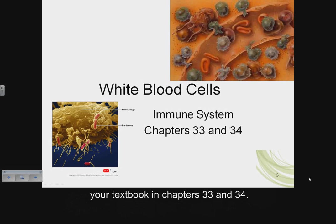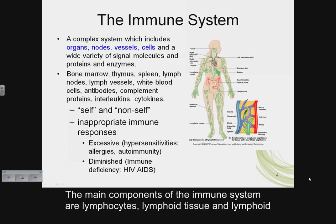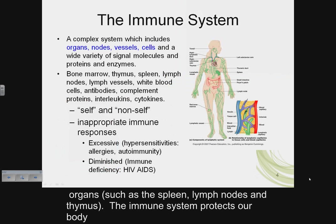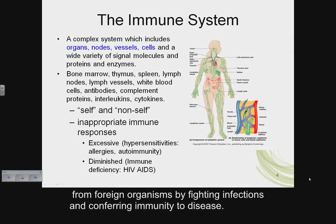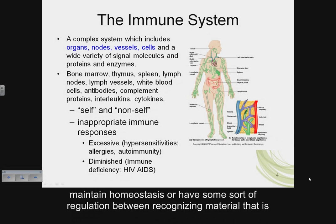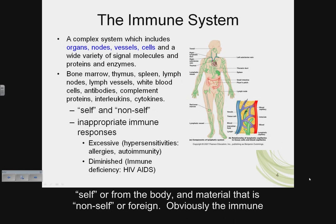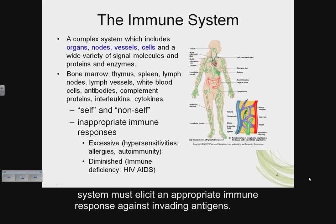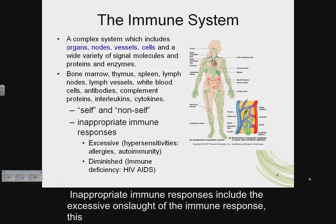This material is covered in your textbook in chapters 33 and 34. The main components of the immune system are lymphocytes, lymphoid tissue, and lymphoid organs such as the spleen, lymph nodes, and thymus. The immune system protects our body from foreign organisms by fighting infections and conferring immunity to disease. The immune system must also maintain homeostasis — recognizing material that is self or from the body, and material that is non-self or foreign.